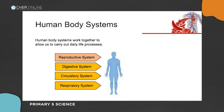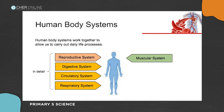There's the reproductive system, the digestive system, the circulatory system, and the respiratory system. For these four systems you will be expected to know them in sufficient detail — stating the different organs and the functions of each. We also have the muscular and skeletal systems, but for these you only need to roughly know their role in the functioning of the human body.